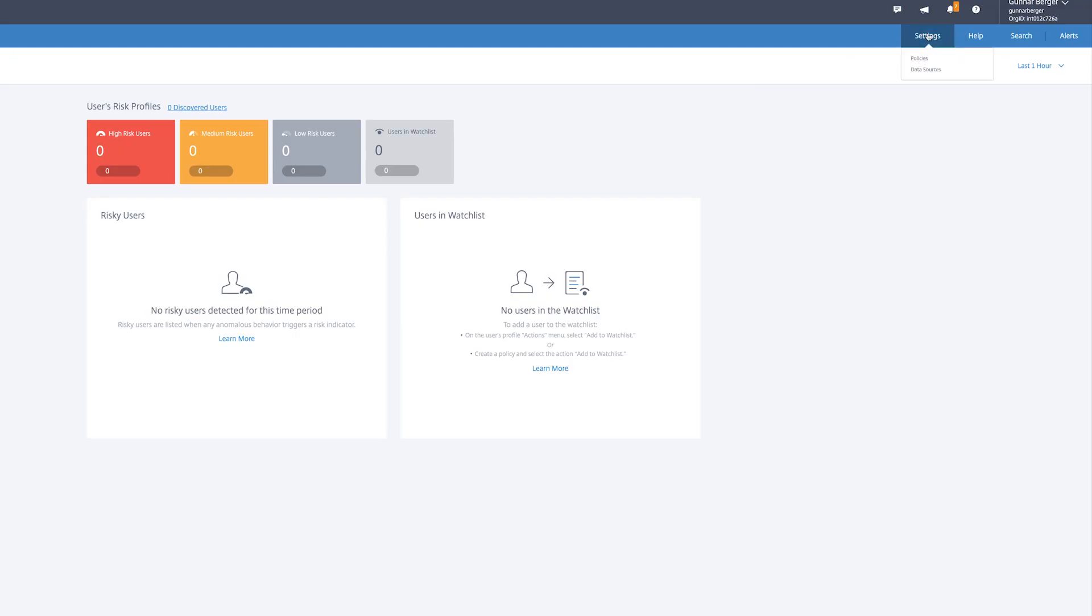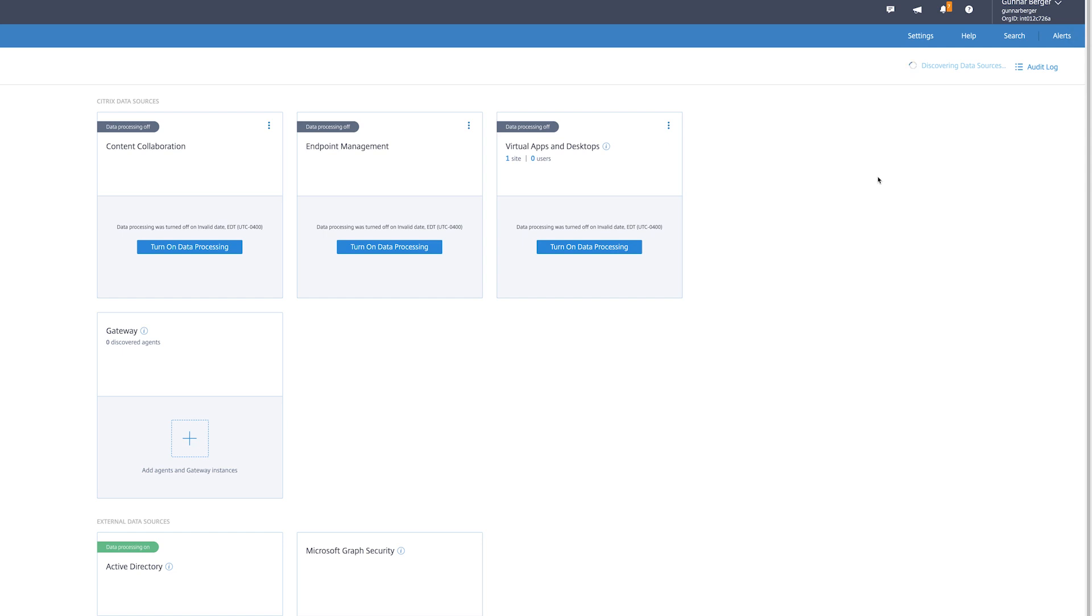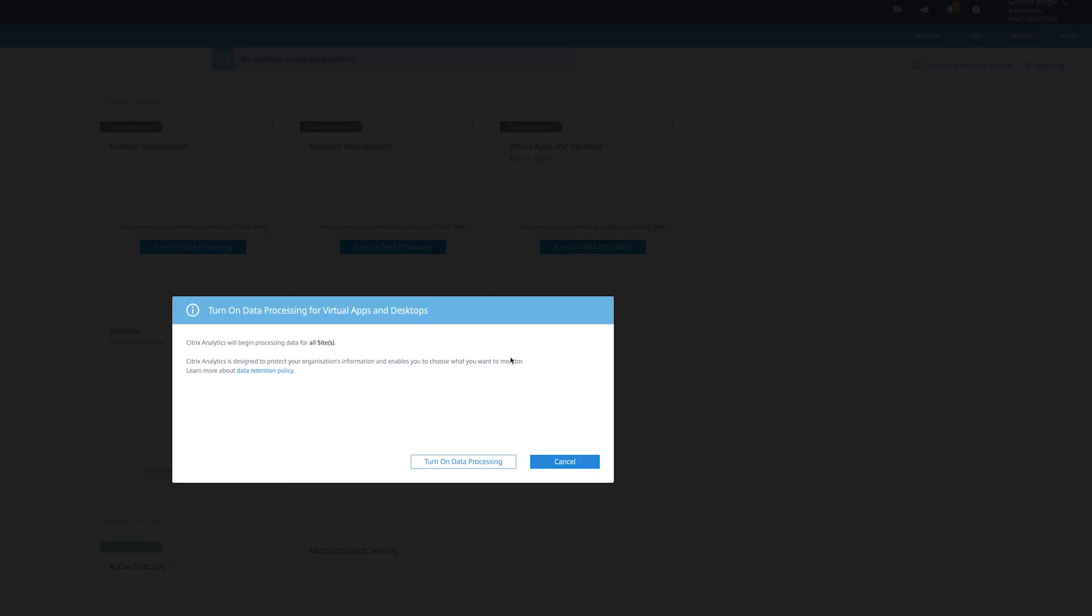Setting up Citrix Analytics is pretty simple. All you have to do is go into settings, click on data sources, then click on turn on data processing for each of the services you want to enable it for.